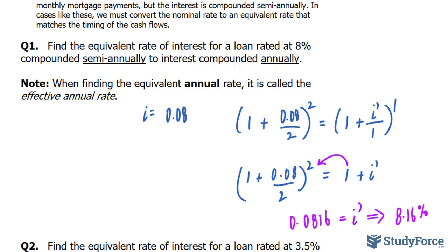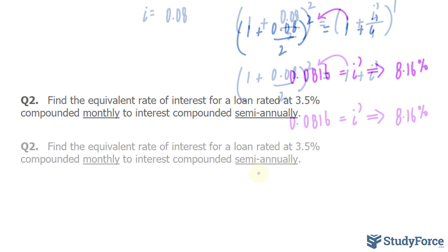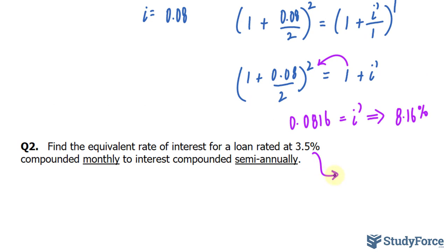0.0816 is I prime. Multiplying that by 100% gives us 8.16%. And that is what we call the effective annual rate, since it's being compounded annually. But now we'll look at an example where we go from compounded monthly to something compounded, in this case, semi-annually. So let's set it up just as before. We'll write this down as a decimal by dividing it by 100%. Gives us 0.035.